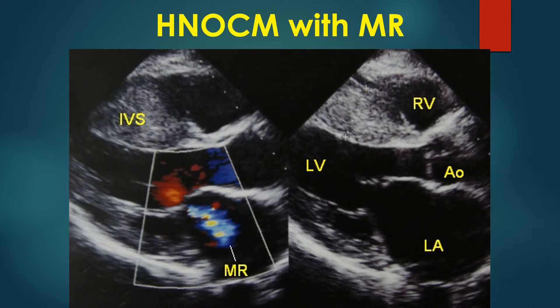A bluish mosaic colored jet of mitral regurgitation is seen in the left atrium during systole when the mitral valve is closed. Please note that there is no narrowing of the left ventricular outflow tract in systole. The flow in the LVOT is laminar without any mosaic pattern. There is no systolic anterior movement of the mitral leaflet, which is the most important cause of LVOT obstruction in hypertrophic cardiomyopathy.